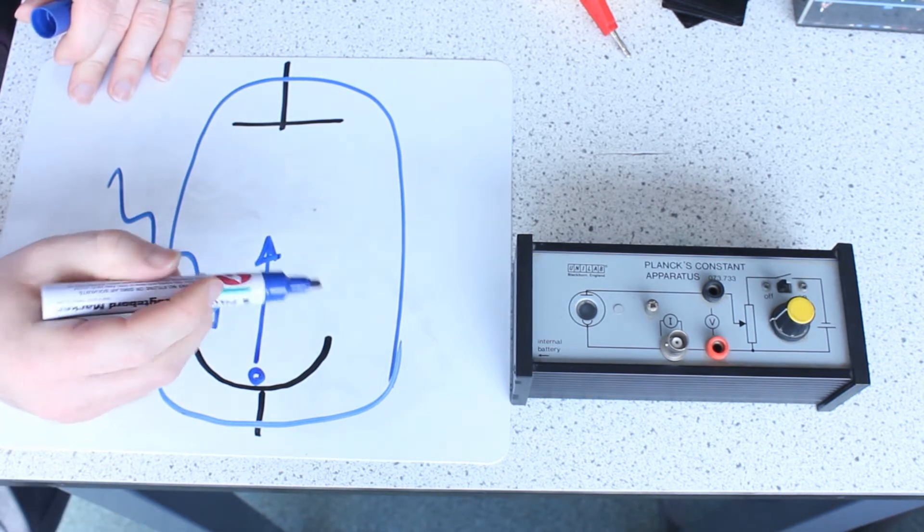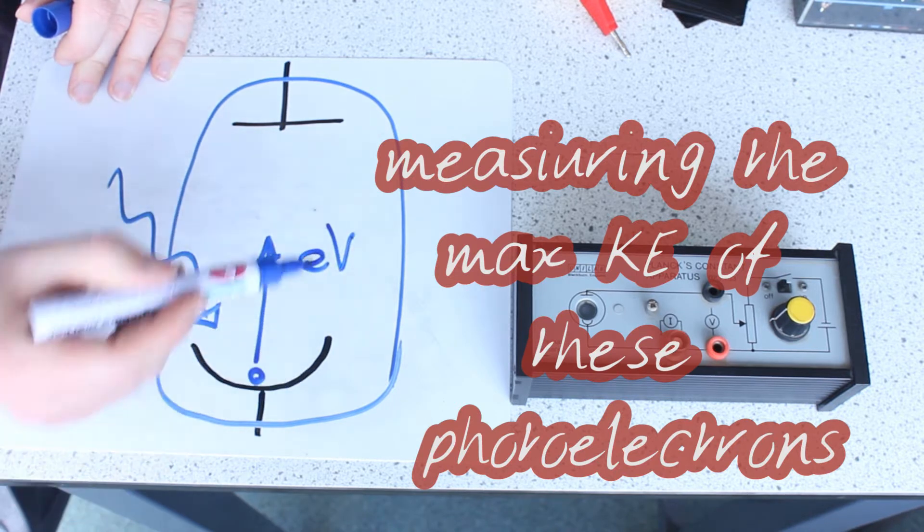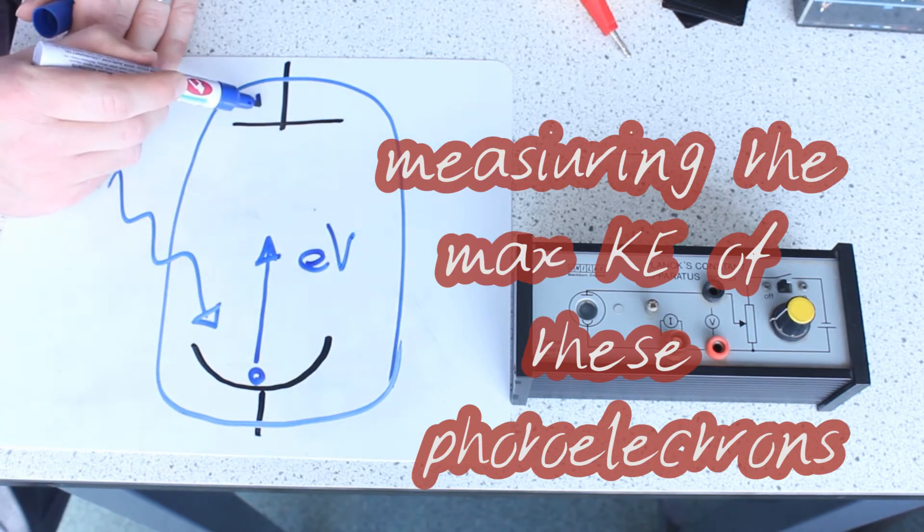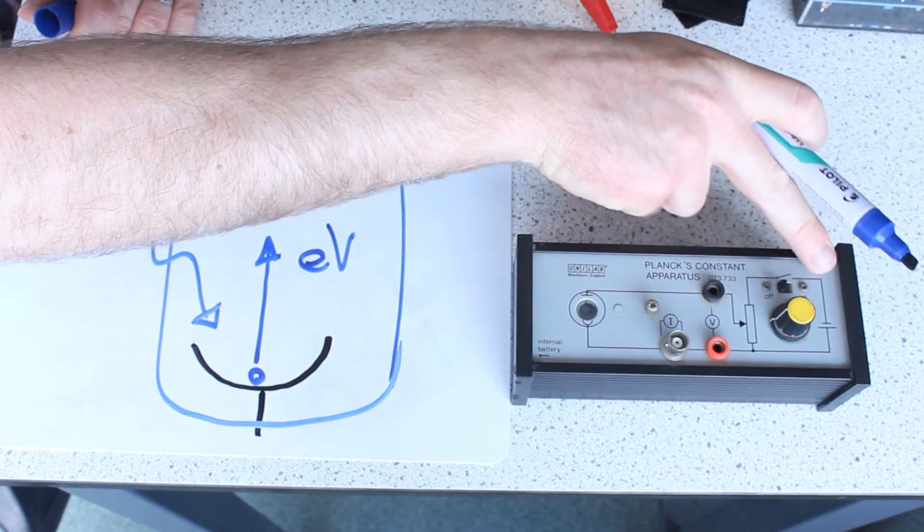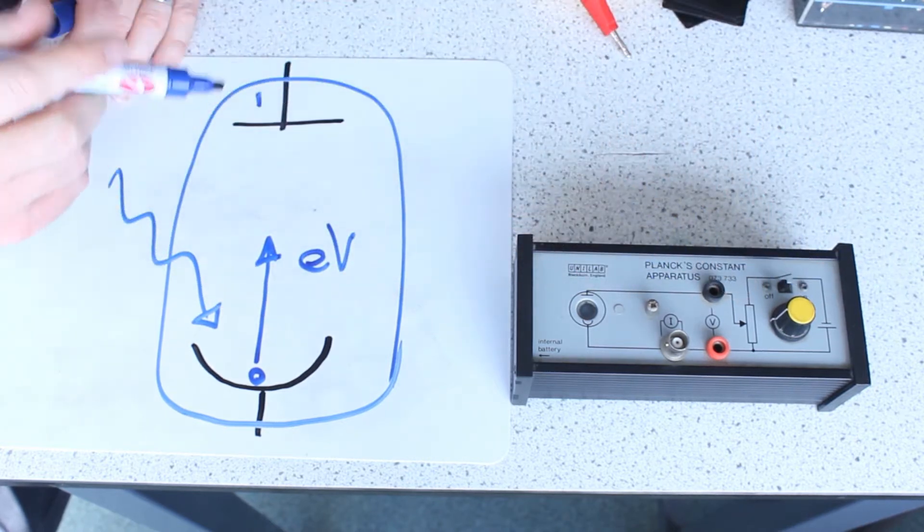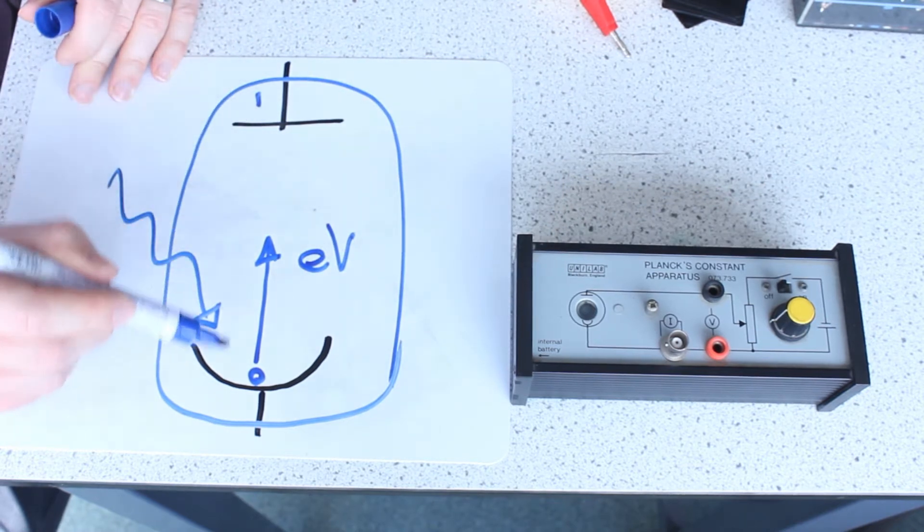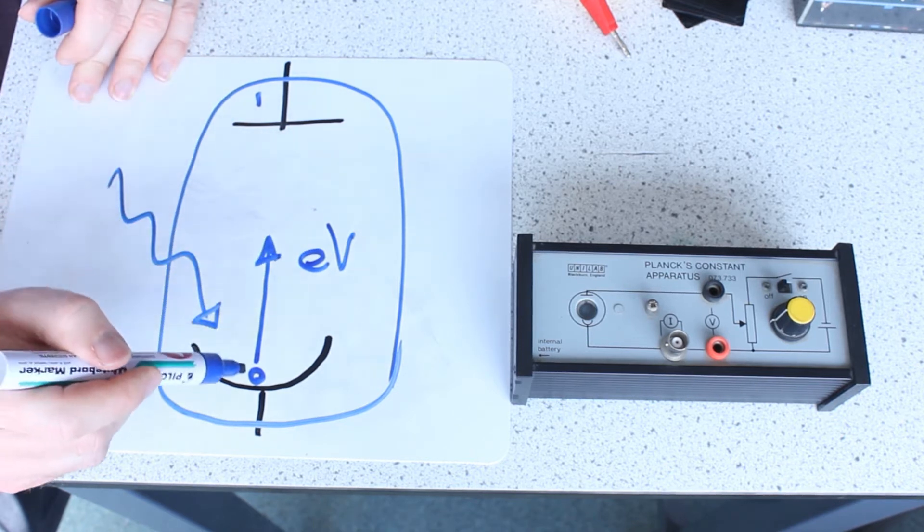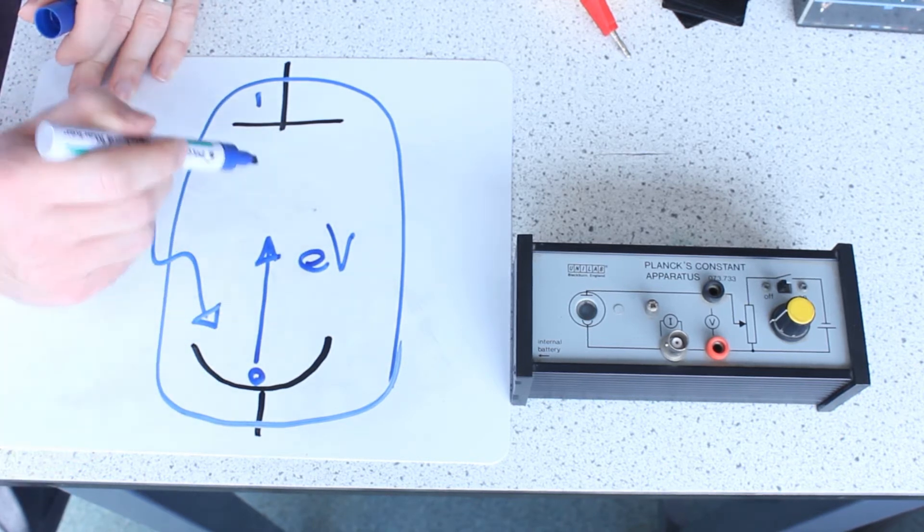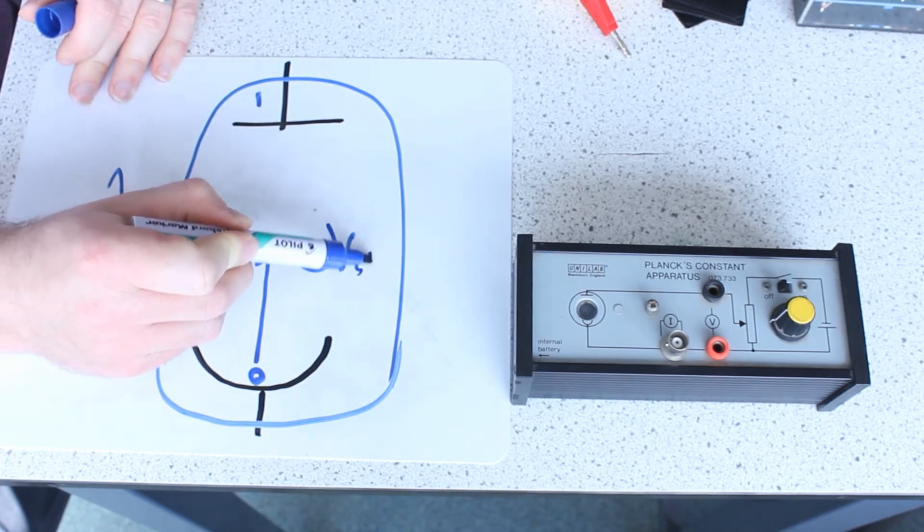These photoelectrons have a kinetic energy which is equivalent to eV where V is the stopping voltage that I need to apply to this side. You'll see this side is the negative side from this cell across here. This is essentially going to repel them back. So the maximum kinetic energy of any of these electrons flowing through here will be equivalent to eV_stop.